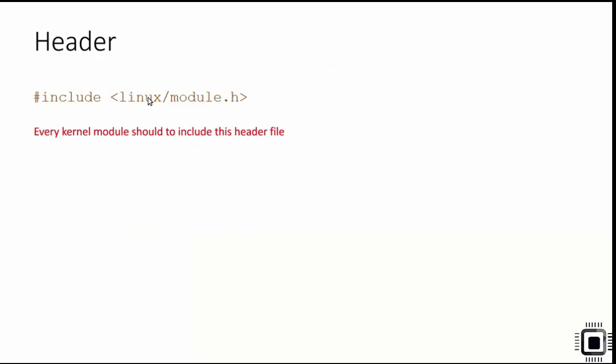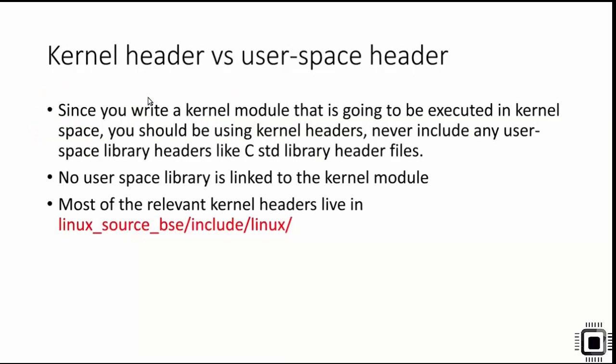The difference between kernel headers and user space headers: for example, stdio.h is a user-level header found in the standard C library. Since you are writing a kernel module that executes in kernel space, you must use kernel headers. Never include any user space library headers like C standard library headers — no user space library is linked to the kernel module during the build procedure. That's why you should not use any user space headers; most relevant kernel headers are placed in the Linux source tree at the path include/linux.